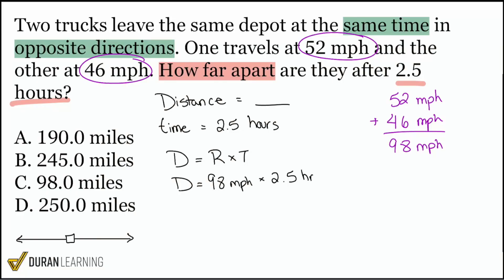hours. So we'll go ahead and get that done here right on the side. Let me move this out of the way. And otherwise we're done. 98 multiplied by 2.5. Here we go.